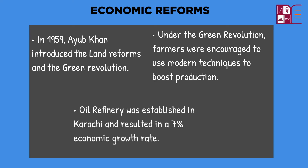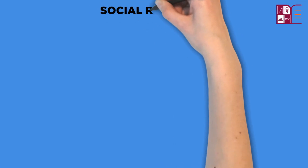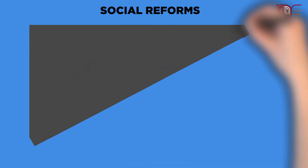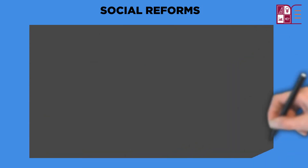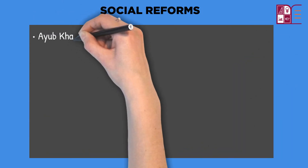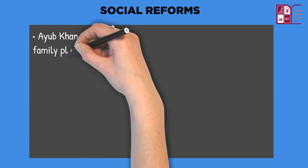An oil refinery was established in Karachi that allowed Pakistan to import crude oil instead of refined oil, which resulted in a 7% economic growth rate.